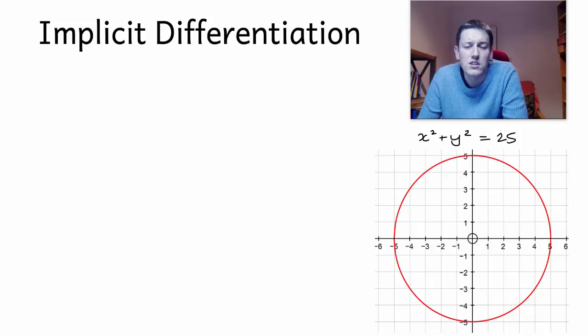Implicit differentiation arises where we're looking at a relation defined implicitly. For example, x squared plus y squared equals 25 is implicit because I don't just have a formula y equals a function of x.